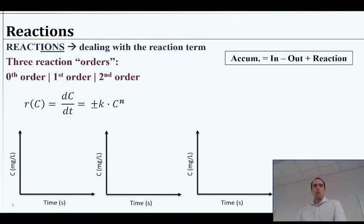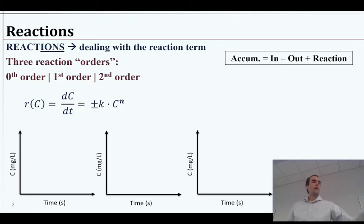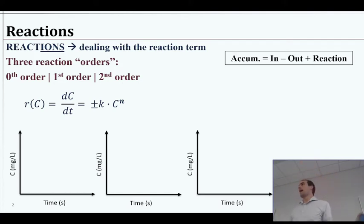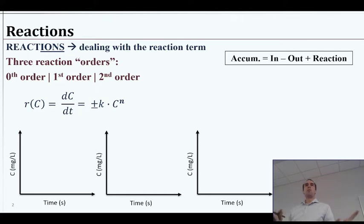First we need to talk about reactions, because a reaction is independent of the reactor itself. If I have a reaction happening in my bottle — maybe it's chlorine killing organisms — it doesn't matter what the bottle looks like. It could be water flowing through it, or just sitting for hours, or a swimming pool: it's the same reaction. So the reaction is not connected to the reactor. We'll first talk about reactions and how to describe them mathematically, then put those into particular reactors and describe the materials balance.